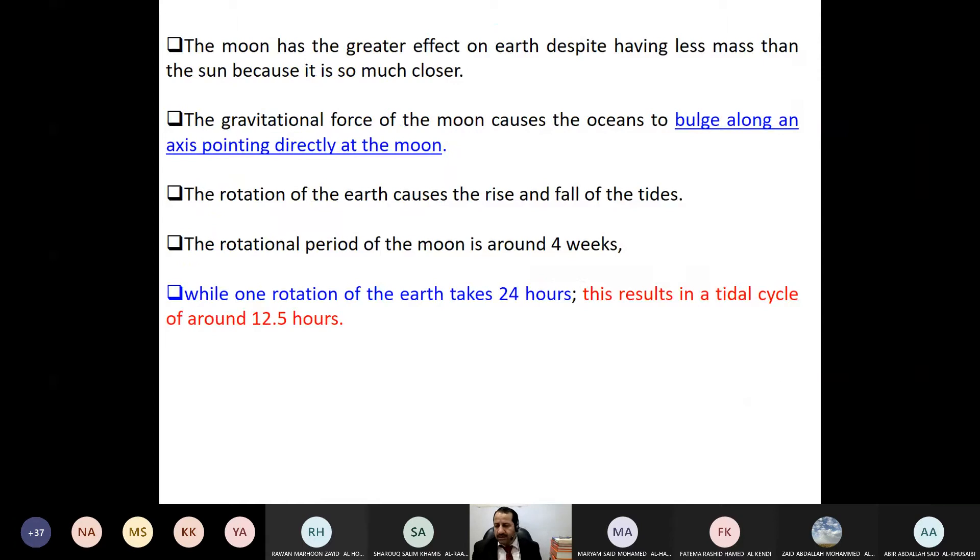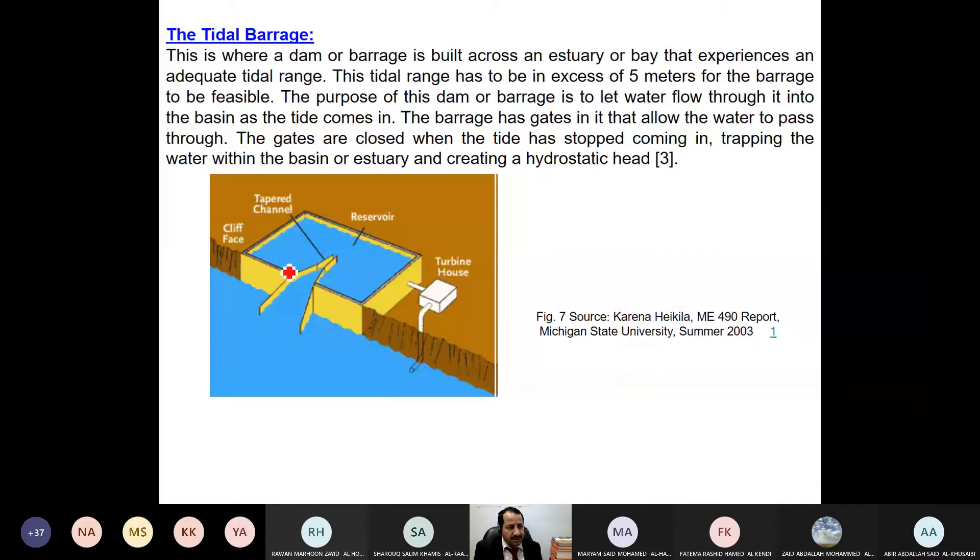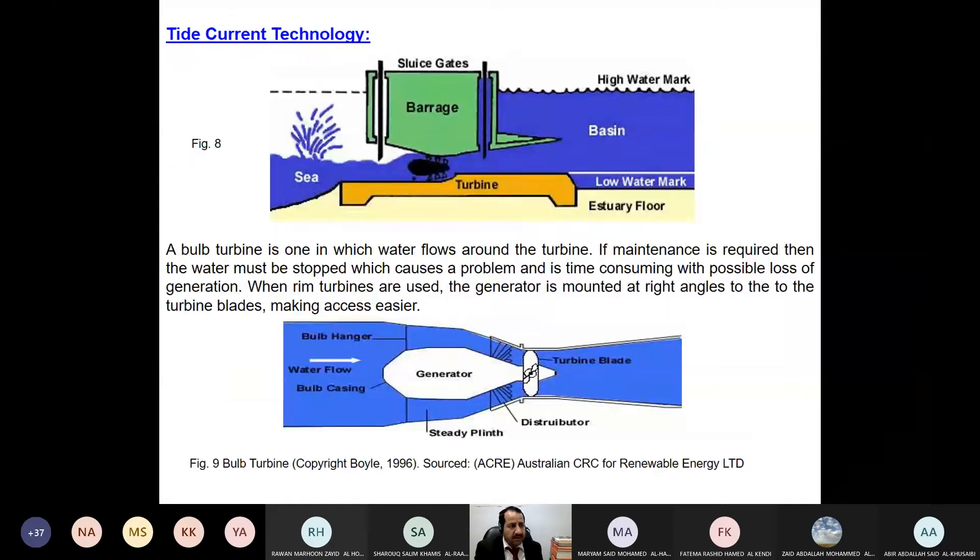What we're doing is extracting the mechanical energy from this water movement. We make a basin or reservoir like a tank. When water comes from the sea to the reservoir, we block it and save it. Later, when it goes back, it's already closed and the water is already saved. We take it from the side through a turbo generator to generate electricity and back to the ocean.